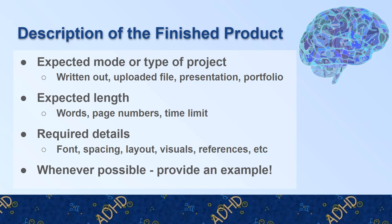Even if you don't have a length requirement, giving a length approximation is often helpful for students who are uncertain — maybe it's words, page numbers, or a time limit. Be sure to include any required details that are necessary: if you have particular things you want for font, spacing, layouts, a certain number of visuals, or references of certain kinds, make sure all of that is very clear. Anything that's implicit is hard for people with neurodivergence to figure out, so treat it like a checklist.